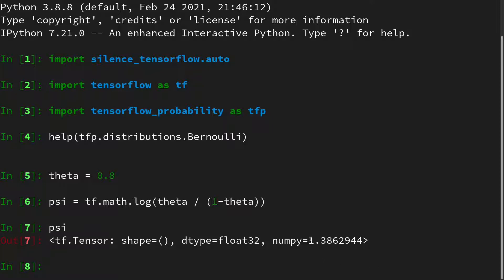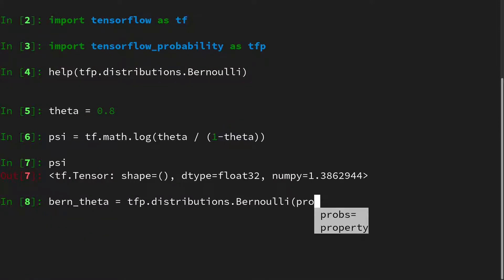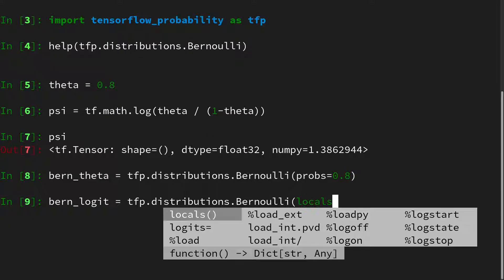Let's define Bernoulli with theta. This is tfp.distributions.Bernoulli and we give it a probability of 0.8. We can also define Bernoulli with a psi or with a logit. This is tfp.distributions.Bernoulli with the logit as our psi.